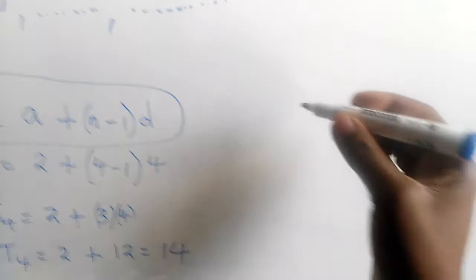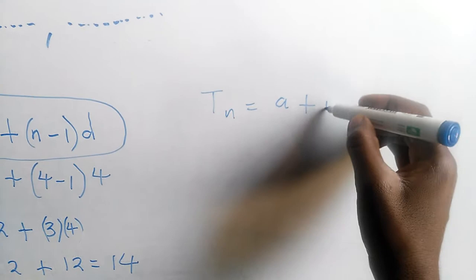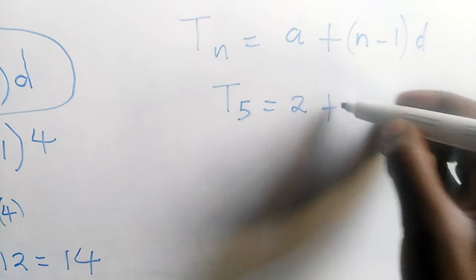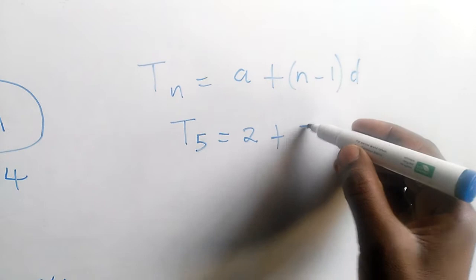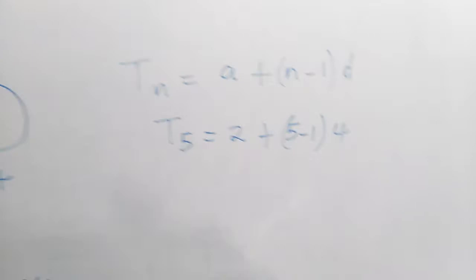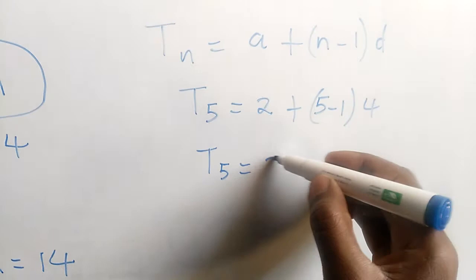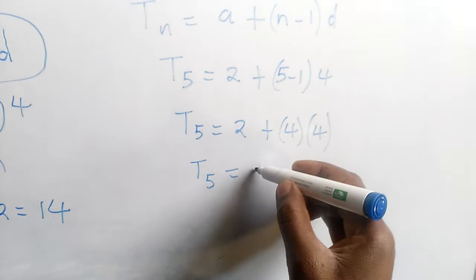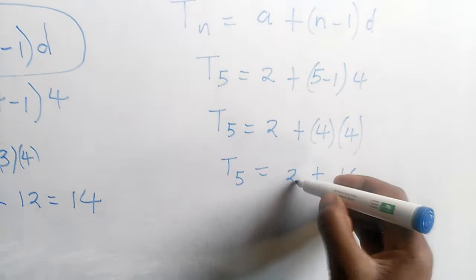If we want term number 5, we'll say T of 5 equals first number 2 plus (5 take away 1) multiplied by the common difference of 4. So we have 4 multiplying 4, which is 16. That's when we can add our 2. Therefore, term number 5 is equal to 18.